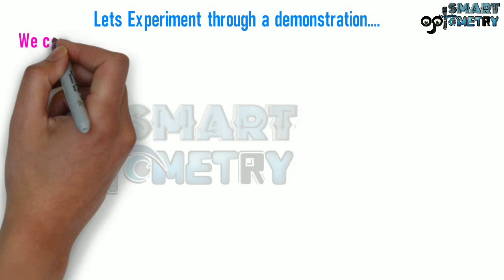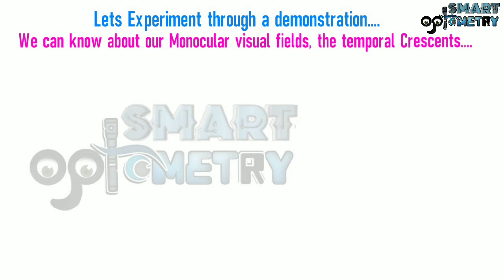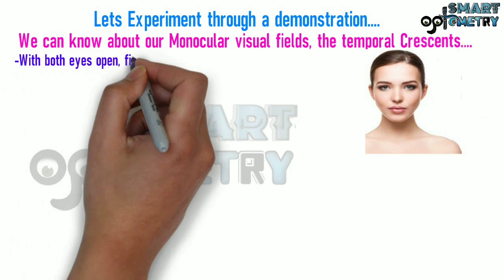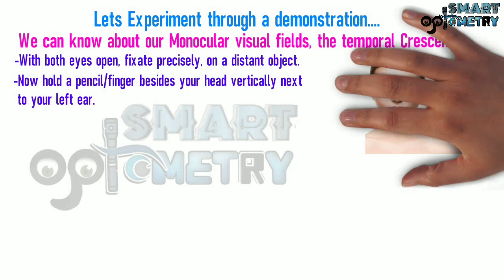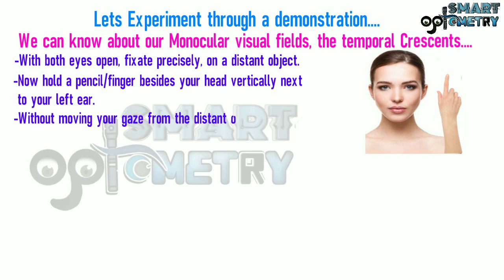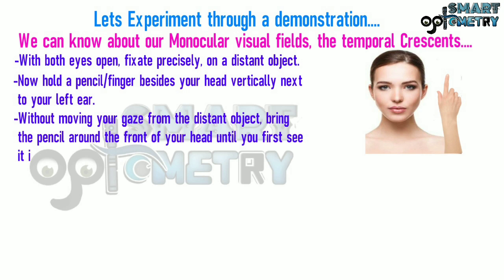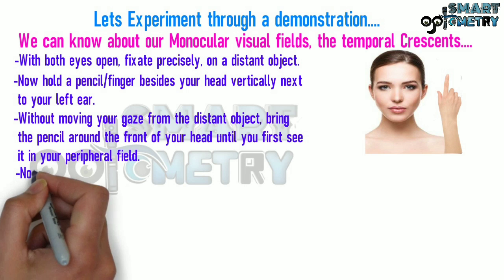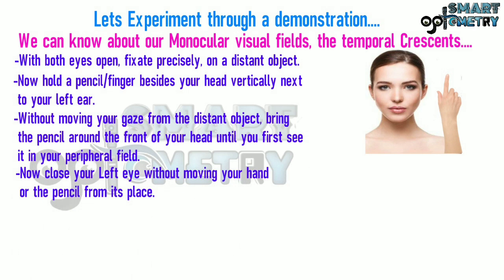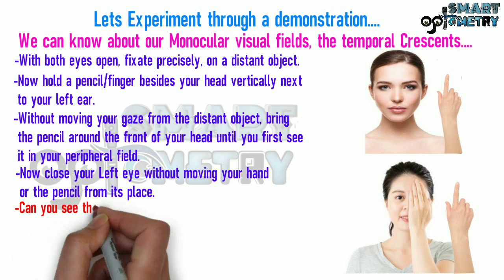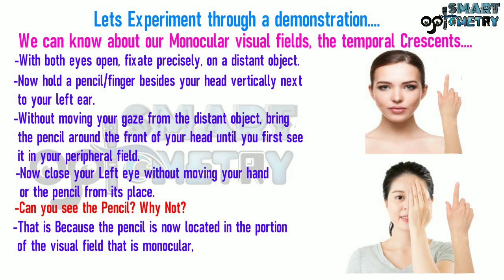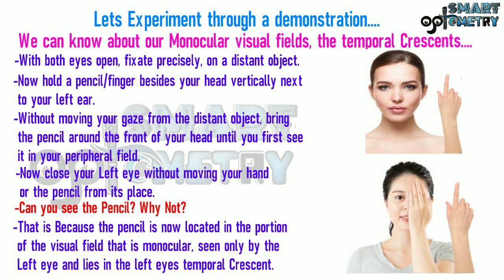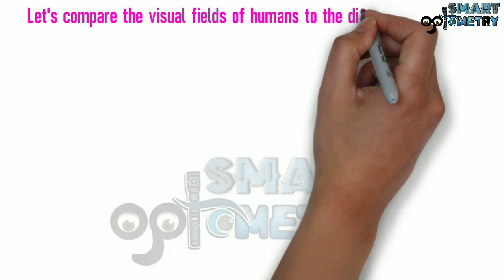Let us experiment through a demonstration to learn about our monocular visual fields and the temporal crescents. With both eyes open, fix your gaze precisely on a distant object. Now hold a pencil or a finger beside your head vertically next to your left ear. Without moving your gaze from the distant object, bring the pencil around the front of your head until you first see it in your peripheral field. Now close your left eye without moving your hand or pencil from its place. Can you see the pencil? Why not? Let us compare the visual fields of different species.